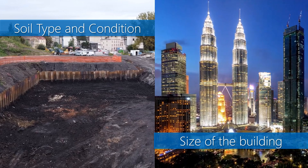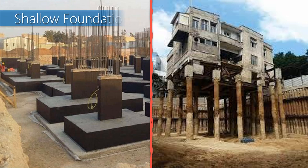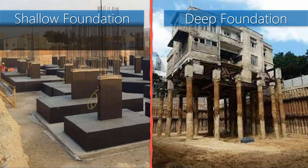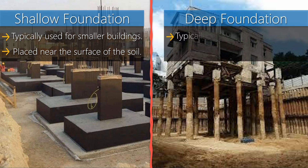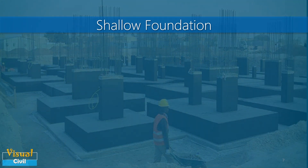Generally, foundations are categorized into two main types: shallow foundations and deep foundations. Shallow foundations are typically used for smaller buildings and are placed near the surface of the soil, while deep foundations are used for larger structures or when the surface soil isn't strong enough.